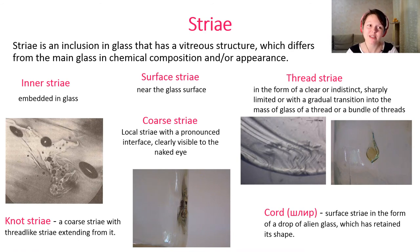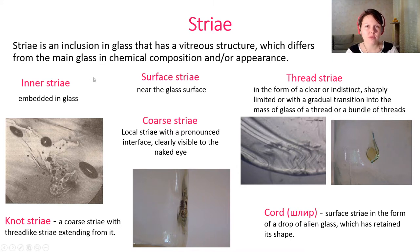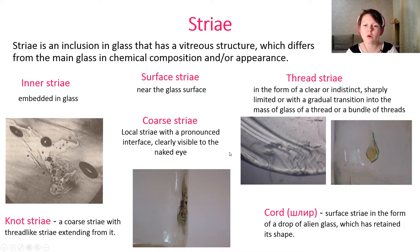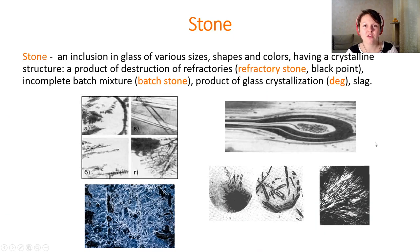We should also talk about strides. A stride is an inclusion in glass that has a vitreous structure differing from the main glass in chemical composition or appearance. We have different kinds: inner strides embedded in glass, surface strides, thread strides, core strides, and knot strides — which are core strides with thread-like strides extending from them. There is also a chord type in Russian called 'clear surface stride', which is a surface stride in the form of a drop of nailing glass that has retained its shape.